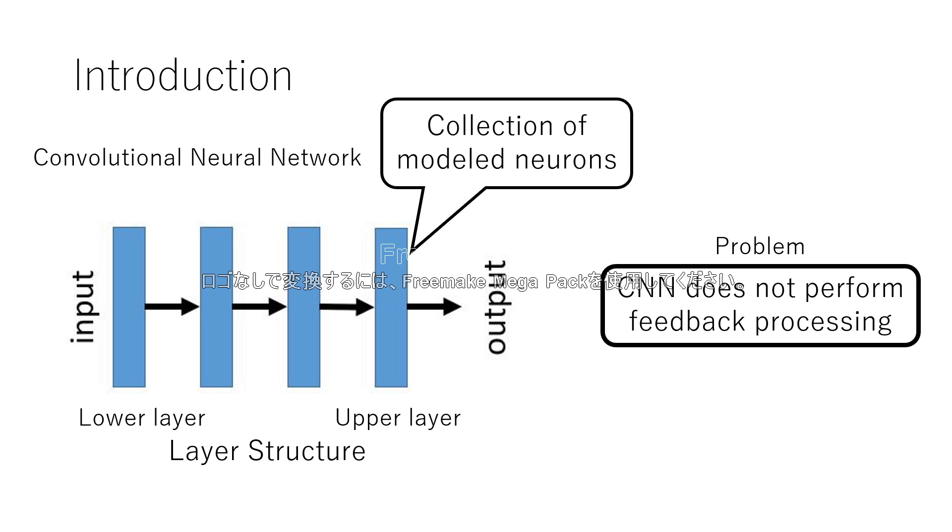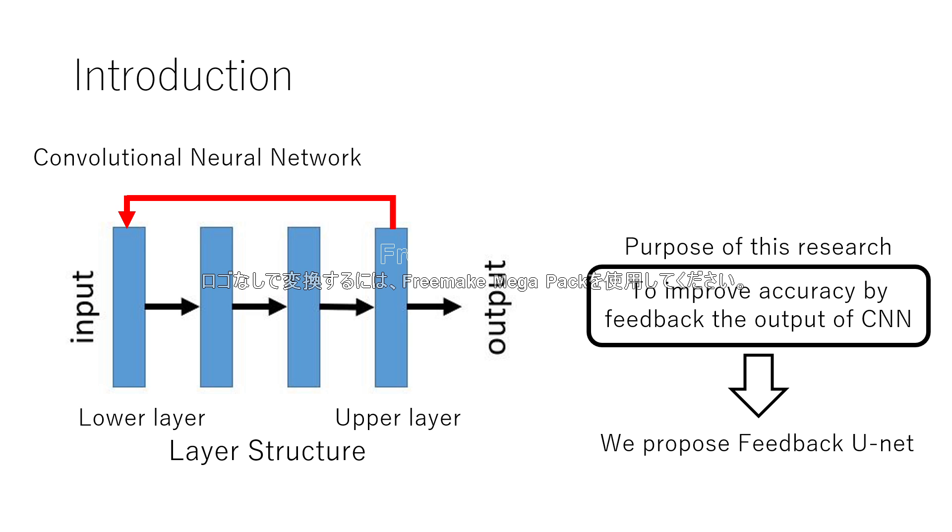Convolutional neural network is a mathematical model of the function of neurons, and several models are proposed until now. Although convolutional neural network imitates the human brain, everyone uses only feed-forward process and feed-back process is not used. Therefore, purpose of this research is to improve accuracy by feed-back the output of CNN.